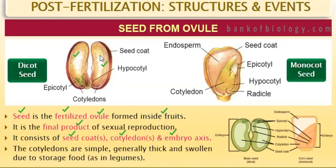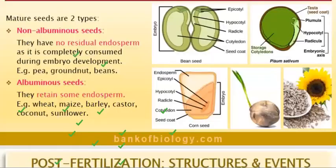The cotyledons are generally thick and swollen due to storage of food, as in legumes. Legumes include rajma, rice, and dal — both black and white. These cotyledons are swollen because they have food reserves for the developing embryo.